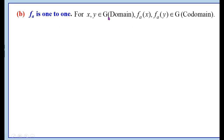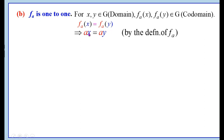For X, Y belonging to G, F_A(X) and F_A(Y) belong to G, the codomain. Assume that the images of X and Y under F_A are equal: F_A(X) equals F_A(Y). By definition, F_A(X) equals AX and F_A(Y) equals AY. Therefore, AX equals AY, which implies X equals Y by the left cancellation law. That is, the element A on the left-hand side cancels, and hence X equals Y.